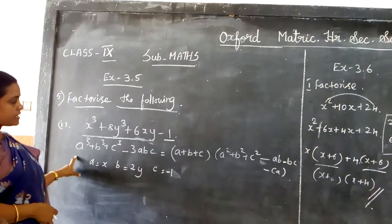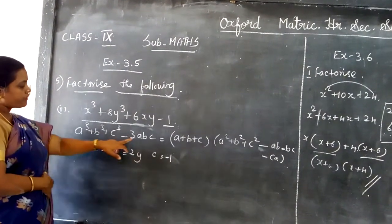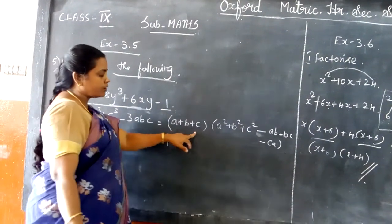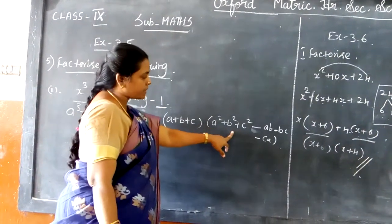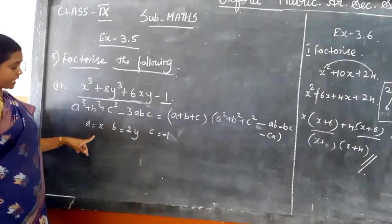Using this identity, we can get the answer directly. It is of the form a³ + b³ + c³ - 3abc, which equals (a + b + c) multiplied by (a² + b² + c² - ab - bc - ca).